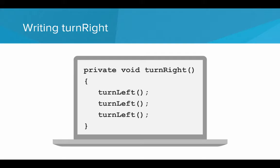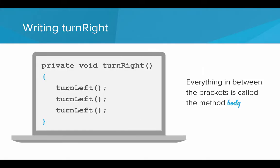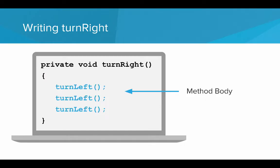Let's see what writing turn right looks like. You write: private, void, turn right, open parentheses, close parentheses, open curly bracket, then turn left three times, then close curly bracket. Let's break that apart. Turn right is the name of the method — the new word or new behavior we're teaching to Carol. Everything that you write is what you want Carol to do; it's the instructions. Everything goes in between those curly brackets — that's the method body. Here you can see turn left three times is the body of the method.